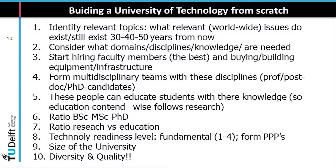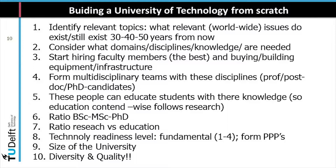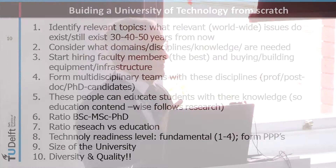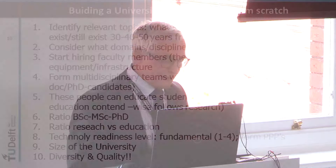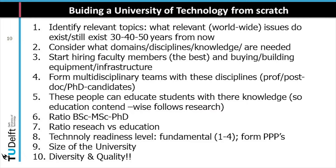The next step is: what are the disciplines, domains, and knowledge needed and best suited to work on these topics? If I could build it from scratch, I would start hiring the best people in those domains — hiring faculty members, building infrastructure, buildings, equipment, etc. With those people you could build multidisciplinary teams. I emphasize that: multidisciplinary teams working on these types of questions. I'm not talking about disciplinary questions or working only in one discipline. There are professors, PhD students, postdocs that together with students form teams to work on these questions, and it should not be limited to the engineering disciplines — in order to train students who are conscious, ethical, and aware engineers. Of course you do all this with the highest possible quality in mind.